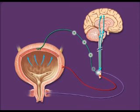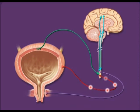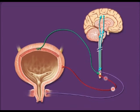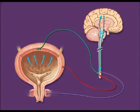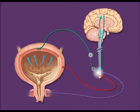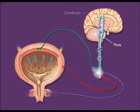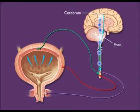In response, parasympathetic neurons from the spinal cord to the bladder are activated, and this causes the smooth muscle on the bladder wall to contract. The sensory signals to the sacral region of the spinal cord also stimulate ascending pathways to the pons and cerebrum, which results in a conscious desire to urinate.